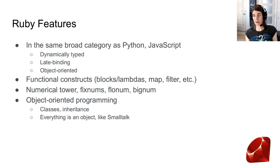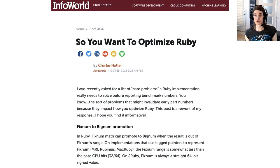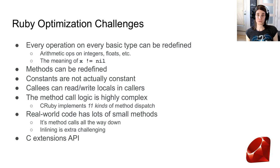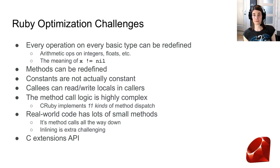Ruby is a language that's notoriously difficult to optimize — there's a classic blog post called 'So You Want to Optimize Ruby' that's still very relevant from 2012. One of the most important challenges is that every operation on every basic type can be redefined. Even arithmetic operations on integers and floats can be redefined at runtime — you can redefine integer plus integer, and even the meaning of nil.